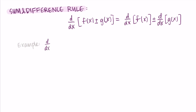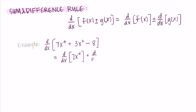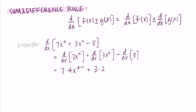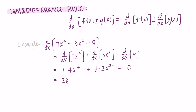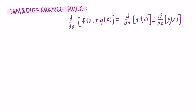Let's put all three rules together. Take the derivative of 7x to the fourth plus 3x squared minus 8. Using the sum and difference rule, we break it into three separate derivatives. For the first term, the 4 comes in front and the power decreases by 1. For the second term, the 2 comes in front and the power decreases by 1. The derivative of 8 is 0 since it's a constant. Simplifying: 7 times 4 gives 28x cubed, plus 3 times 2 gives 6x, and the 0 disappears — so the answer is 28x cubed plus 6x.